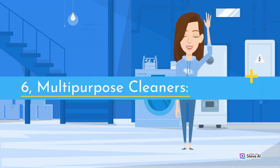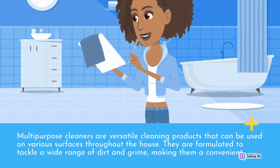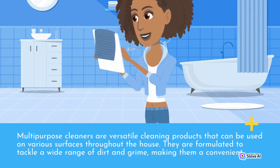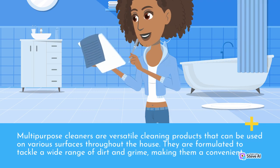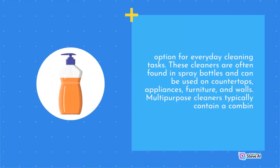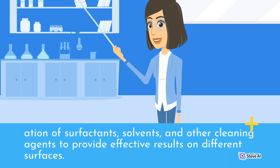6. Multi-purpose Cleaners. Multi-purpose cleaners are versatile cleaning products that can be used on various surfaces throughout the house. They are formulated to tackle a wide range of dirt and grime, making them a convenient option for everyday cleaning tasks. These cleaners are often found in spray bottles and can be used on countertops, appliances, furniture, and walls. Multi-purpose cleaners typically contain a combination of surfactants, solvents, and other cleaning agents to provide effective results on different surfaces.